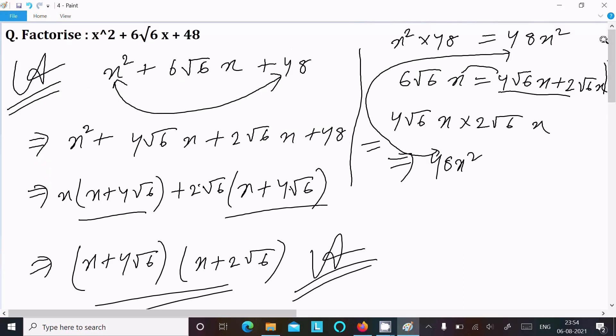The factorization of x² + 6√6x + 48 equals (x + 4√6)(x + 2√6). This is the way we can do the factorization of this equation. I hope this video is helpful for you. This video is over, so thanks for watching. See you next week. Thank you.